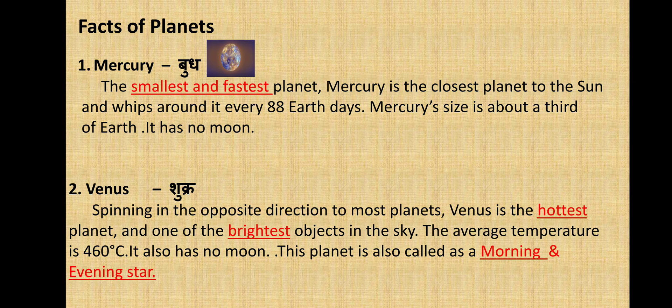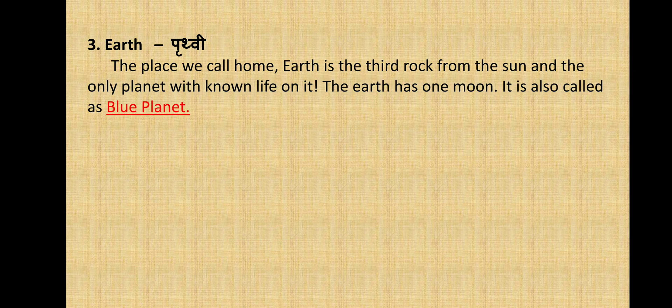Next comes Venus, also known as Shukra. Venus spins in the opposite direction to most planets. Venus is the hottest planet and one of the brightest objects in the sky. The average temperature is 460 degrees Celsius. It also has no moon, and this planet is also called the morning and evening star.